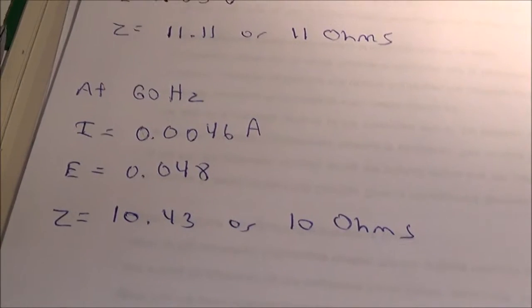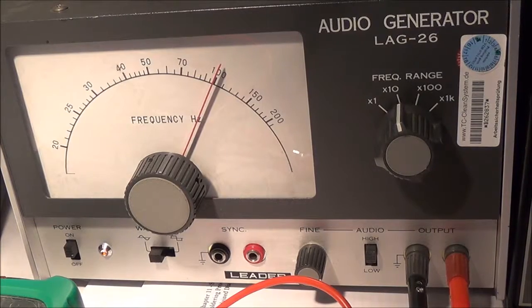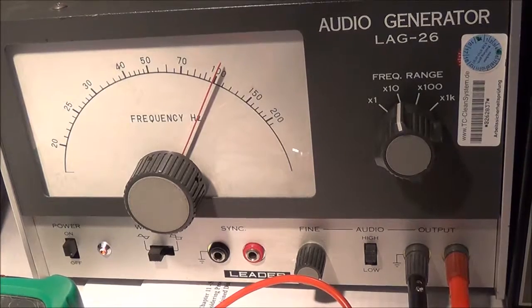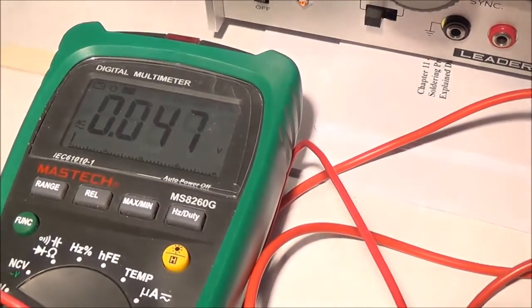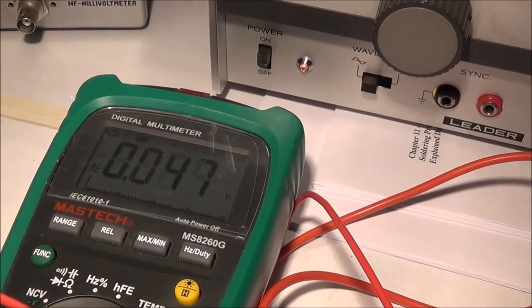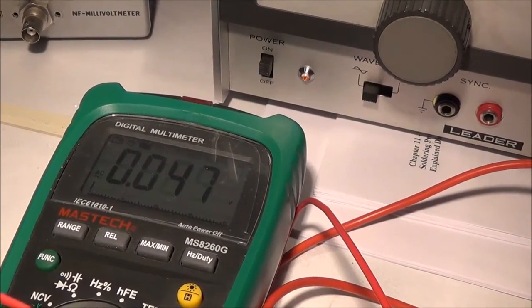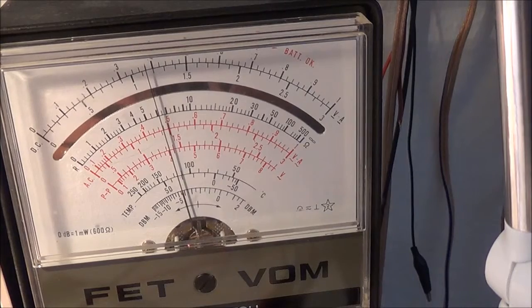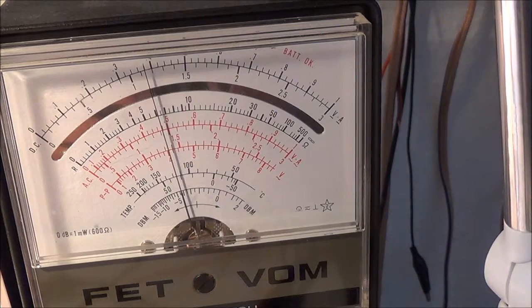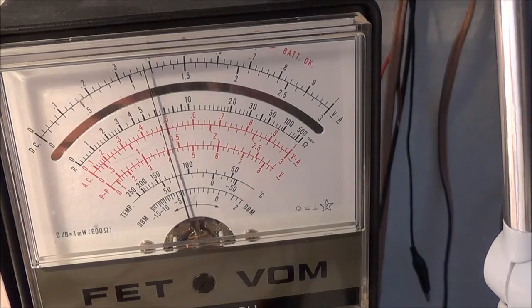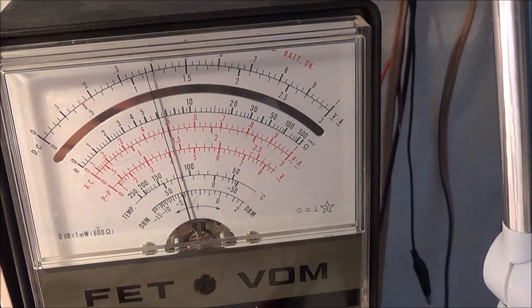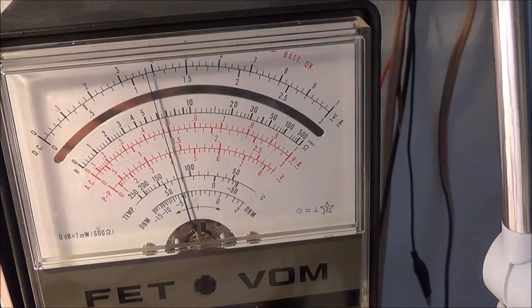The audio generator is now putting out 1000 hertz. As far as voltage is concerned, it looks like 0.047, which is 47 millivolts AC. The current looks like 4.8 milliamperes, which is 0.0048 amperes.